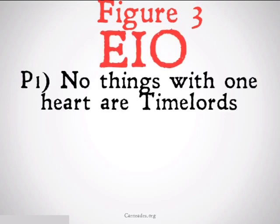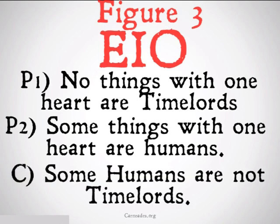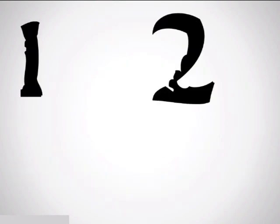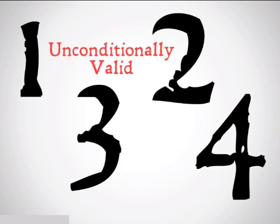EIO: No things with one heart are time lords. Some things with one heart are humans. Therefore, some humans are not time lords. That was the unconditionally valid forms of figure 3.